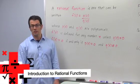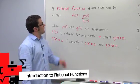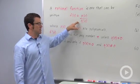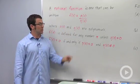I want to talk about a very important class of functions called rational functions. A rational function is one that can be written f of x equals p of x over q of x, where p of x and q of x are polynomials.